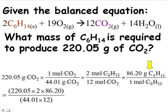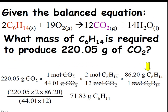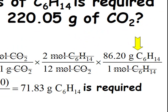To get the answer, we take 220.05 times 2 times 86.20 and divide by the product of 44.01 times 12. If you are using a calculator, be sure to put the bottom numbers in brackets. The answer is calculated to be 71.83 grams of C6H14. So, 71.83 grams of C6H14 is required.